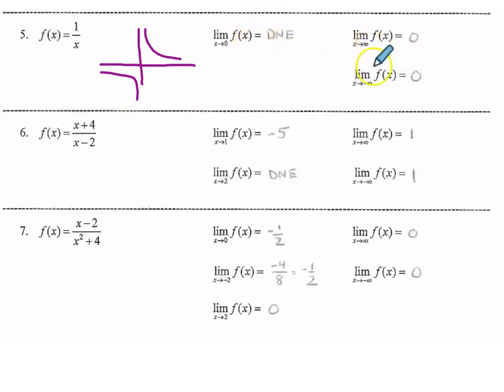And then the limits at infinity and negative infinity are both zero because this is a larger degree in the denominator. The degree of x is one, but the degree of any constant is zero. And you can see it on the graph here as well. As the graph goes to both positive and negative infinity on the x-axis, the y values do tend toward the x-axis itself.